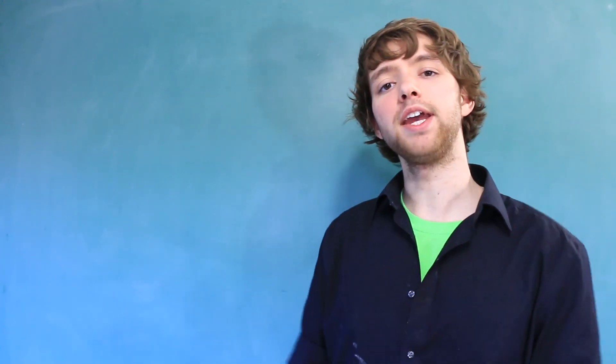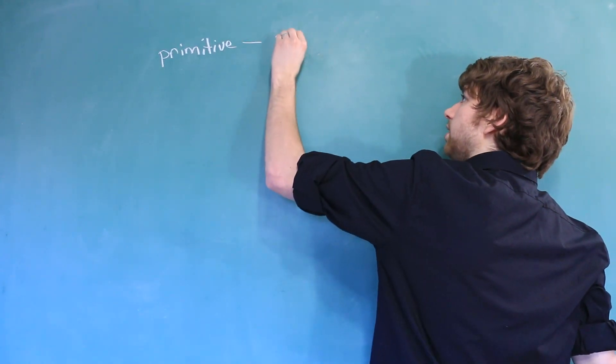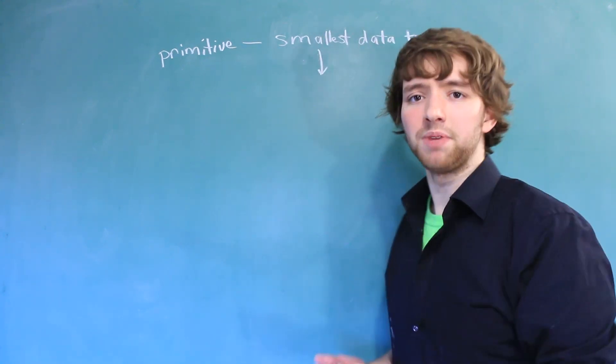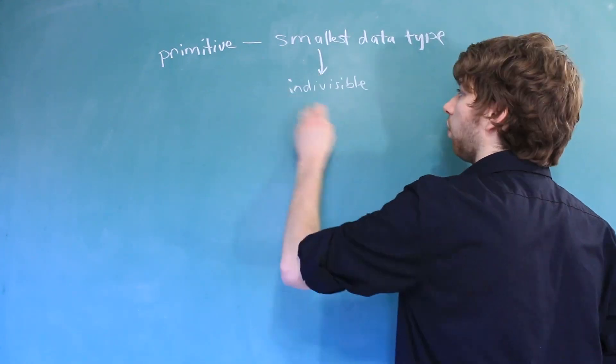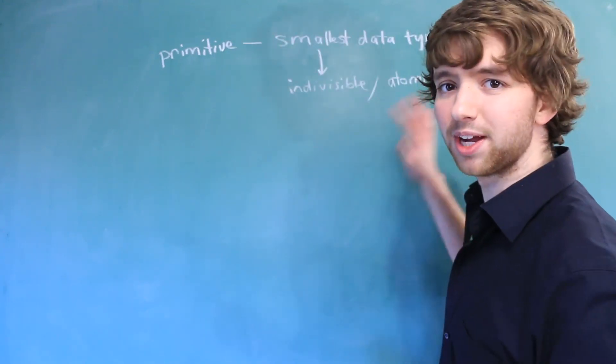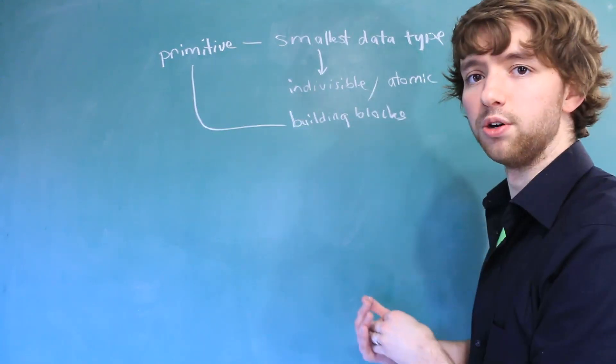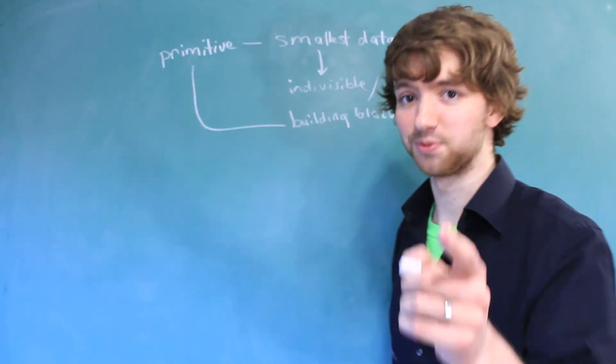Our human brains like to group things. So to help us out, data types are often classified. And one of these classifications is called primitive data types. The primitive data types are considered to be the smallest data types. And when I say smallest, I don't mean like size. What I mean is that they can't be broken up into pieces. You could say that they are indivisible, or what some people would say, atomic. If that doesn't make a whole lot of sense, consider primitive data types as the building blocks. These are like the Legos that we can combine and piece together to make more complex data types.